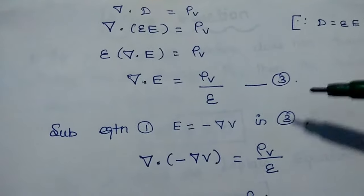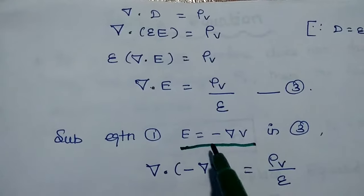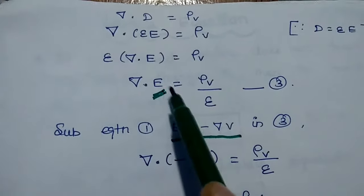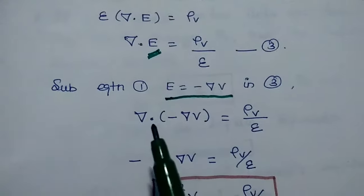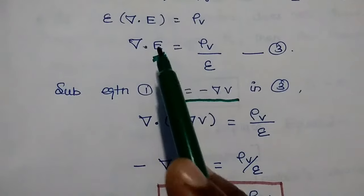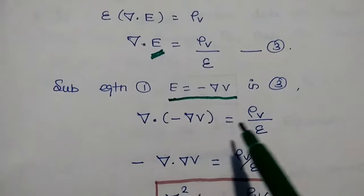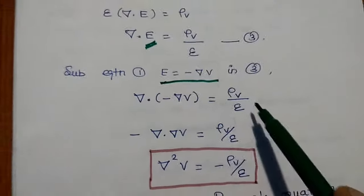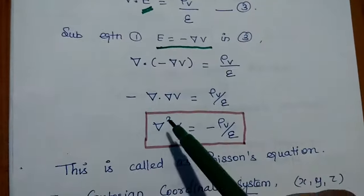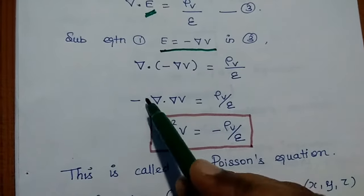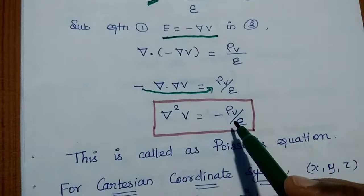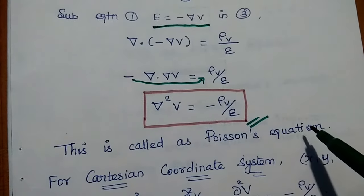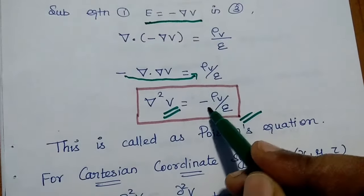Now we substitute the first equation E equals minus del V into the third equation. So E in the third equation is replaced by minus del V, giving del dot minus del V equals rho V by epsilon. Taking the minus outside: del dot del V equals rho V by epsilon. Since del dot del is del squared, we get del squared V equals minus rho V by epsilon. This is the Poisson equation, relating potential to volume charge density.